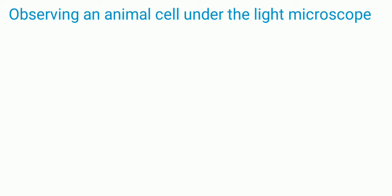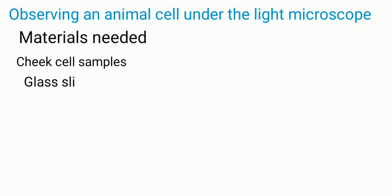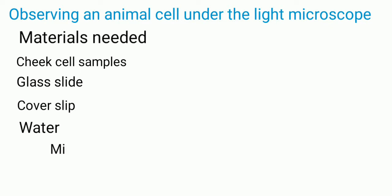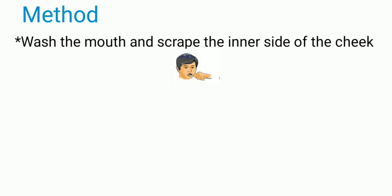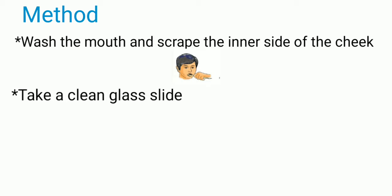First we will look at how to observe the animal cell under the microscope. The materials needed are cheek cell samples, glass slide, cover slip, water, and a microscope. We have to take the cheek samples by scraping the inner side of the cheek with a spoon or a toothpick, then place the sample on a clean glass slide.